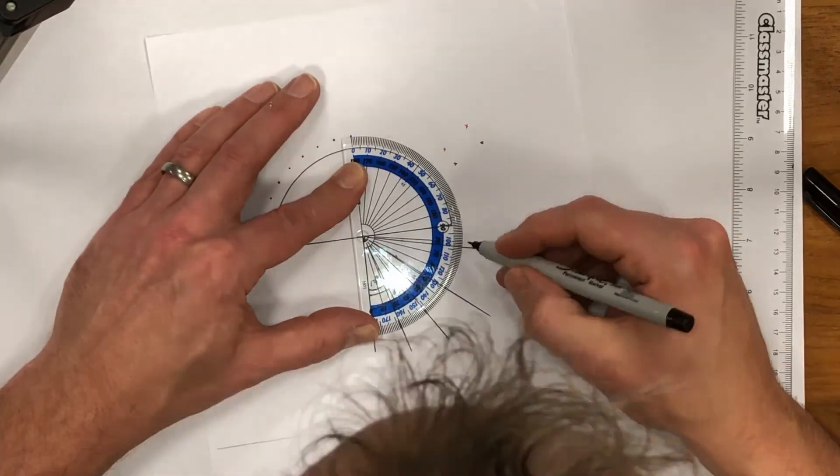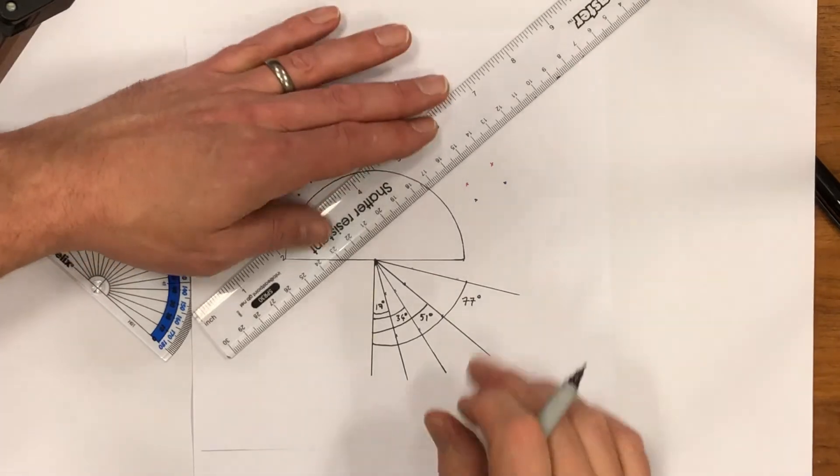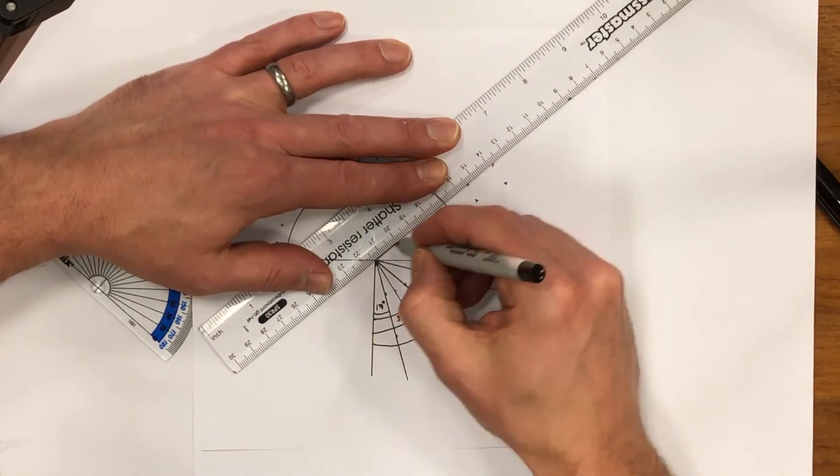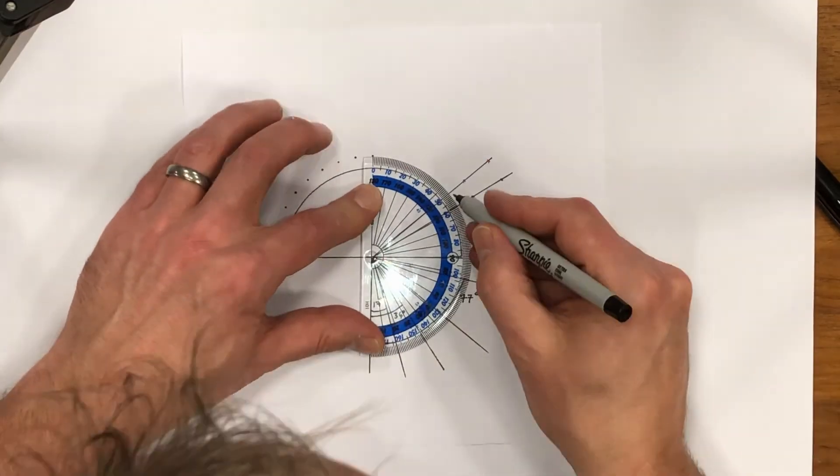I now do the same for the reflected rays—the ones that have done total internal reflection inside the glass block—and measure the angles at which those have come out.